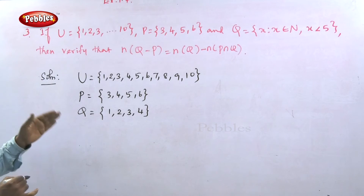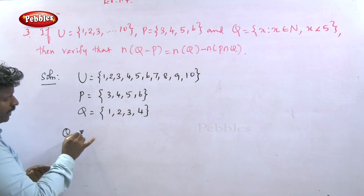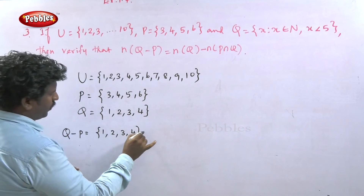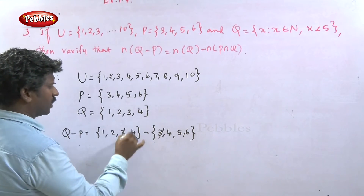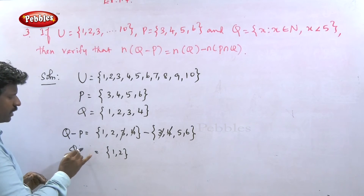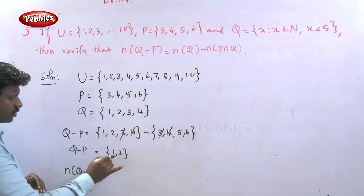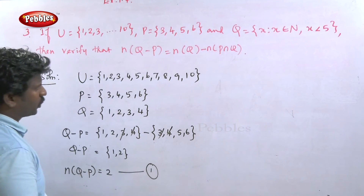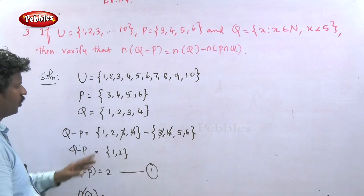Finding Q minus P: Q equals {1, 2, 3, 4} minus P equals {3, 4, 5, 6}. Cancelling the common elements: 3 cancels, 4 cancels. The remaining elements are {1, 2}. So n of Q minus P equals 2. This is equation one.